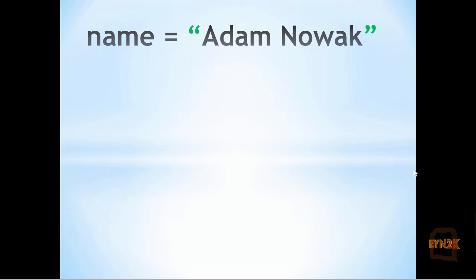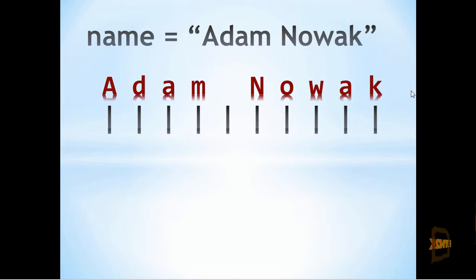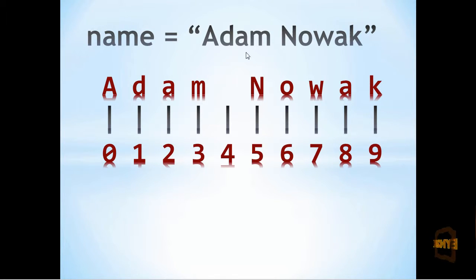So if we have a look at the string Adam Novak assigned to the variable we have called name, we can access individual characters from it, using their index values, shown here. As we can see, the space in Adam Novak has an index value associated with it.